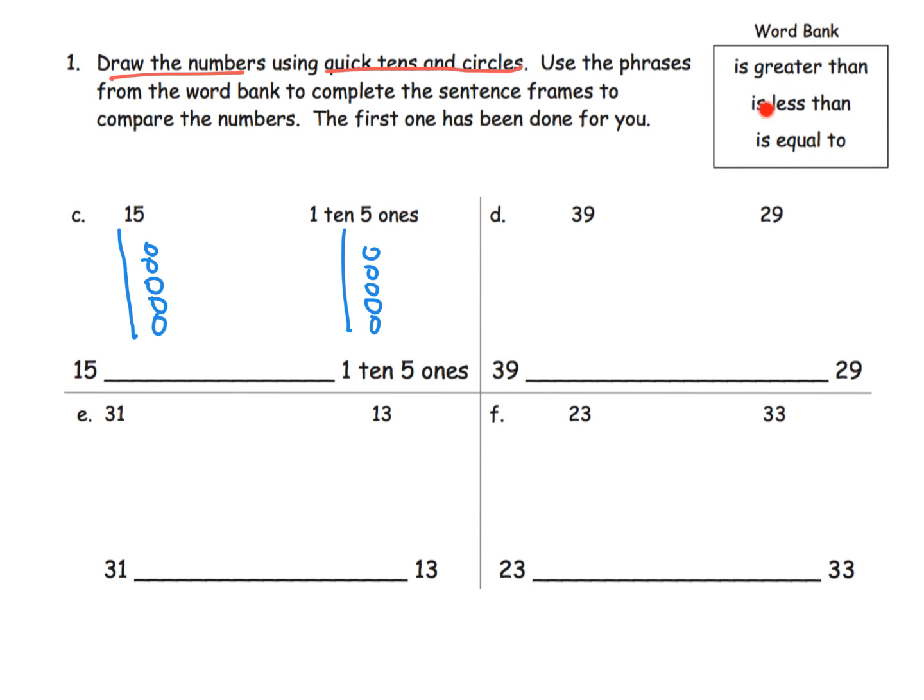So how did these two numbers compare? Is one greater than, is one less than, or are they equal? And we can see oh they are equal, so we're going to put is equal to. So we've got 15 is equal to one 10 and five ones, and that's hopefully this will not be much of a surprise to our students.